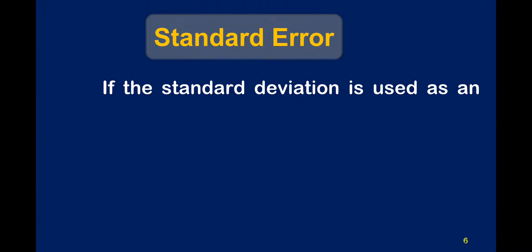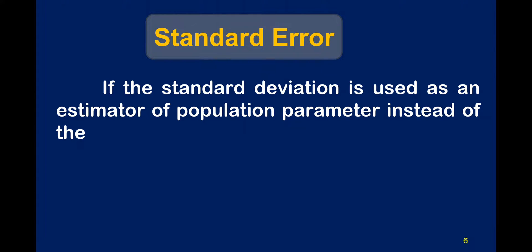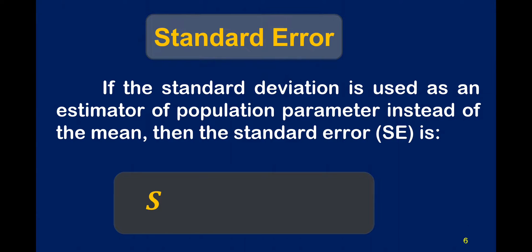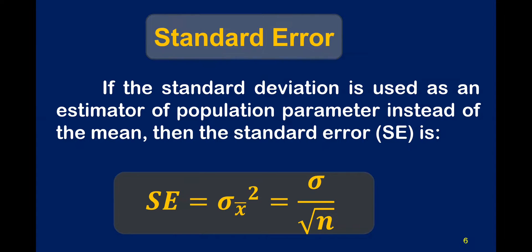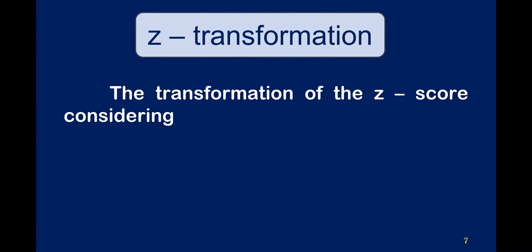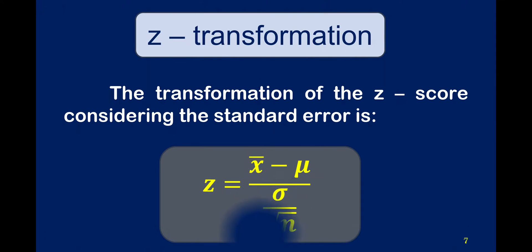If the standard deviation is used as an estimator of the population parameter instead of the mean, then the standard error is equal to sigma sub x-bar, which is equal to sigma divided by the square root of n. The transformation of the z-score considering the standard deviation is z equal to the mean less the population mean, divided by the standard deviation over the square root of n.